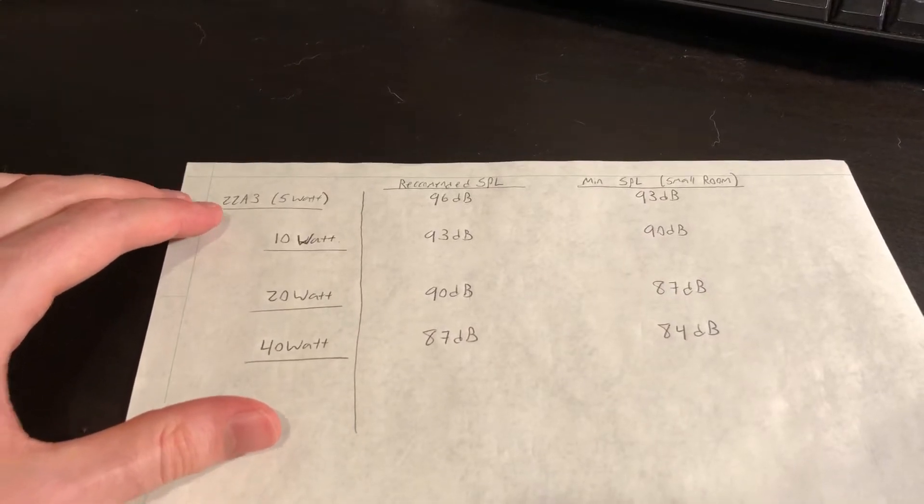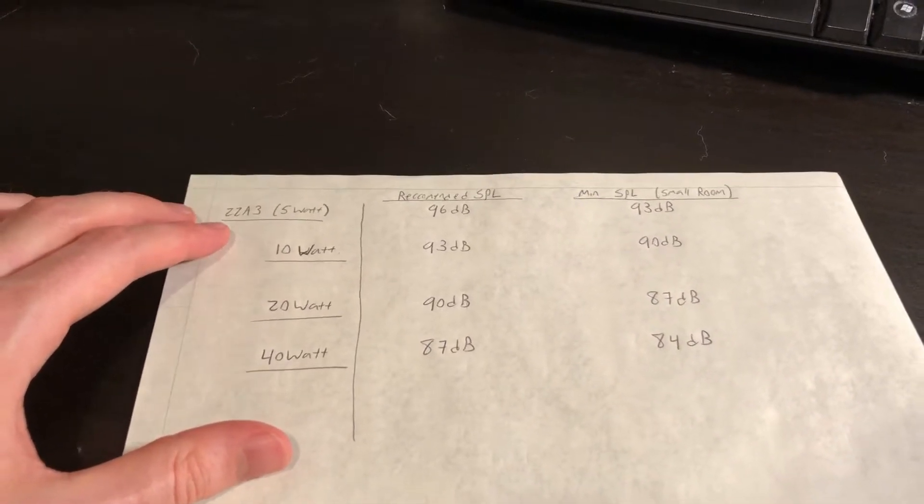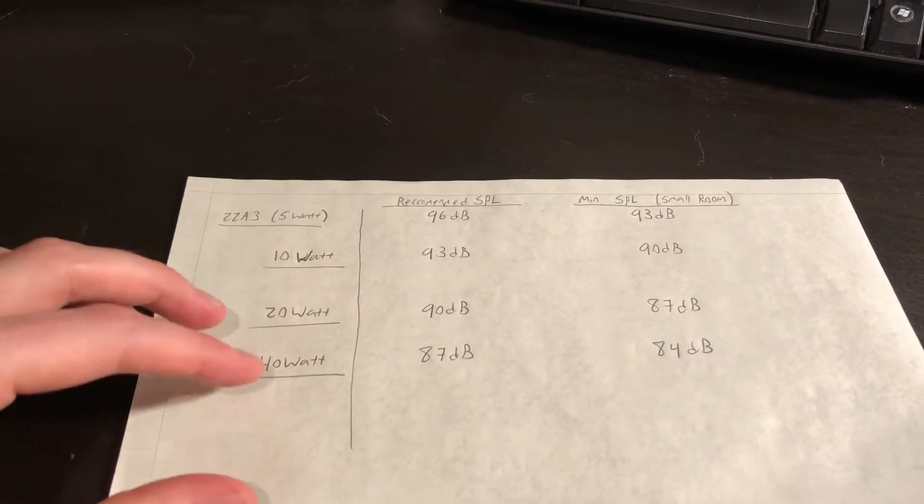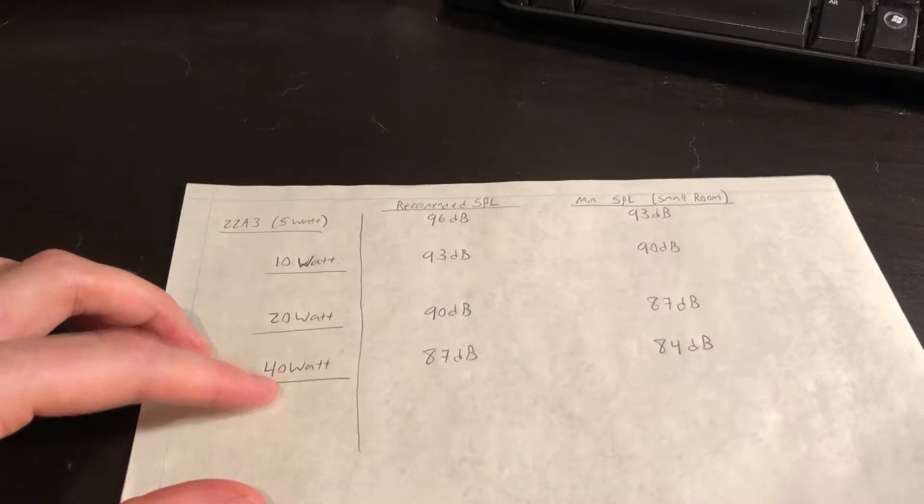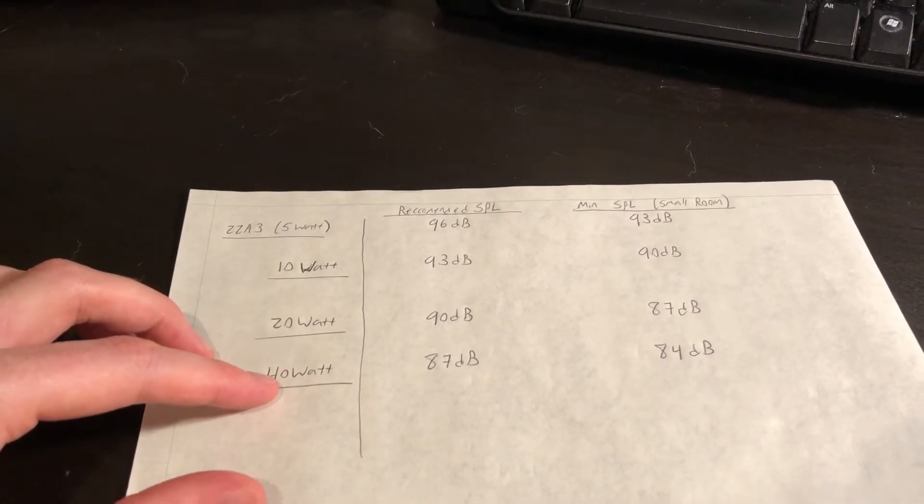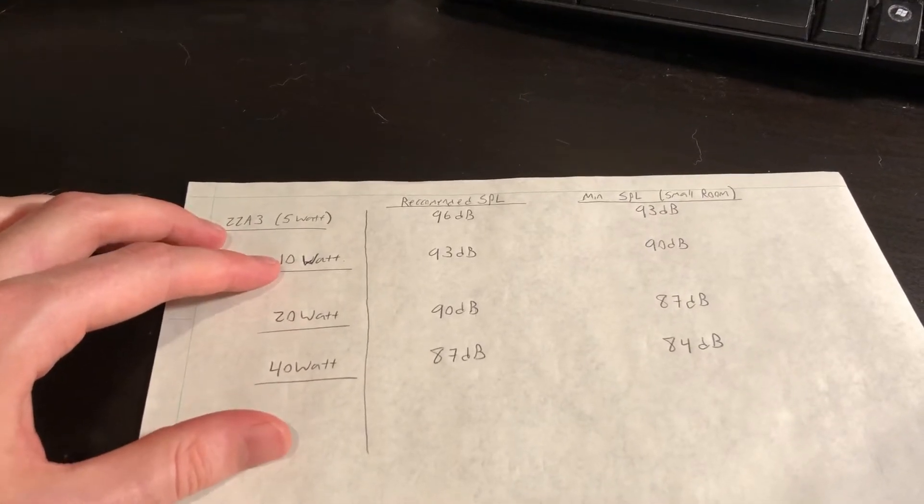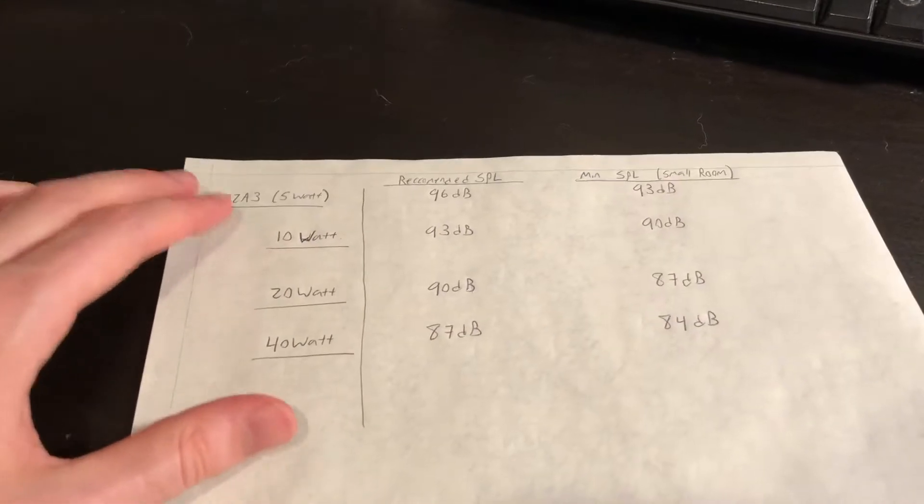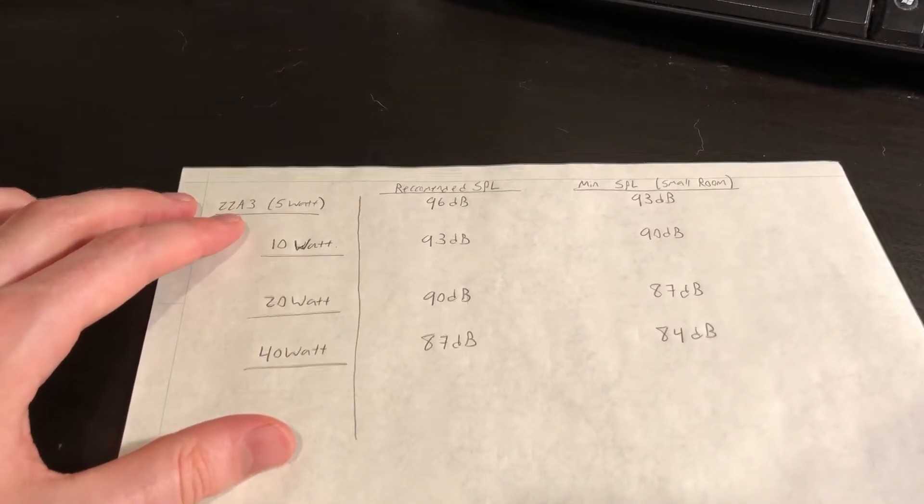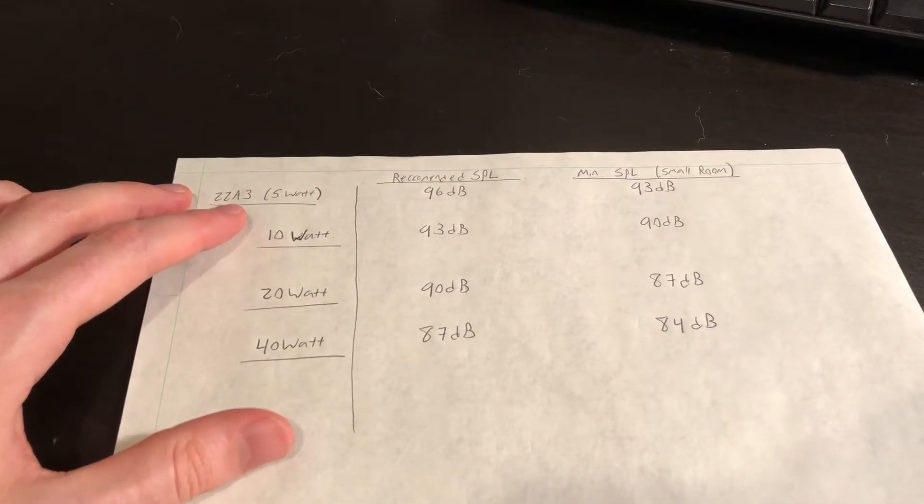And this is why, although we have our 5 watt 22A3 amplifier today, my goal is to jump up to a much higher power amplifier using a pair of 845s in this 40 watt range. Yes, we could develop a 300B amplifier that maybe delivers 10 watts. But in terms of SPL, you're not really gaining a whole lot. You're better off in many circumstances using our parallel single-ended 22A3 amplifier.